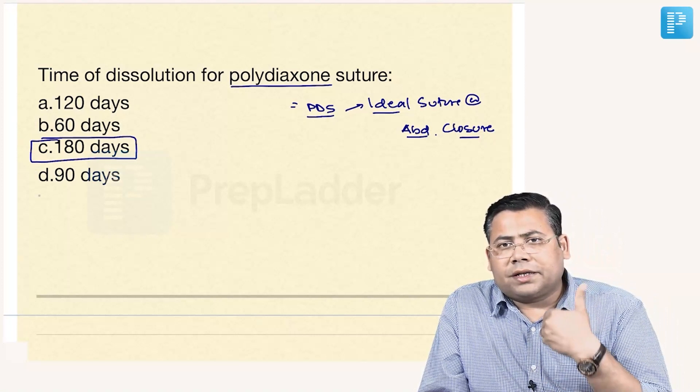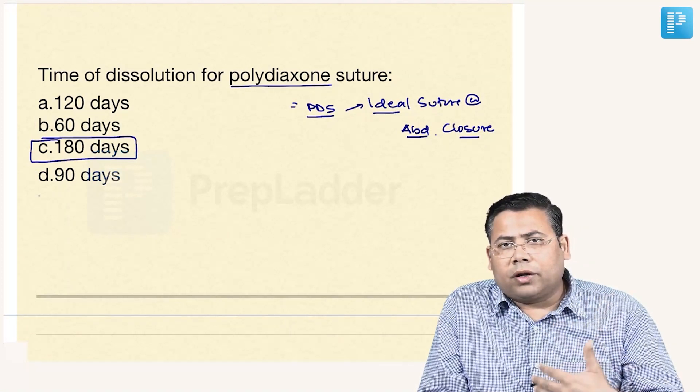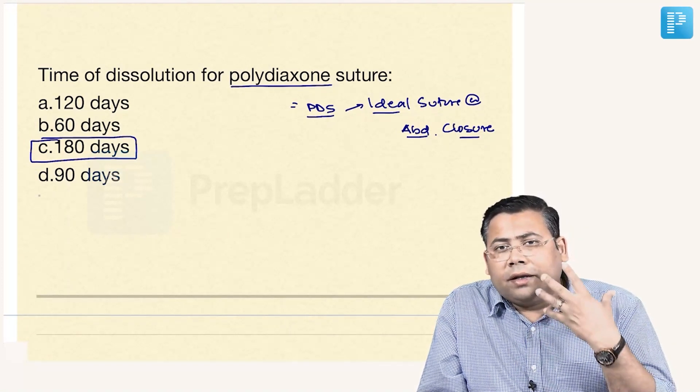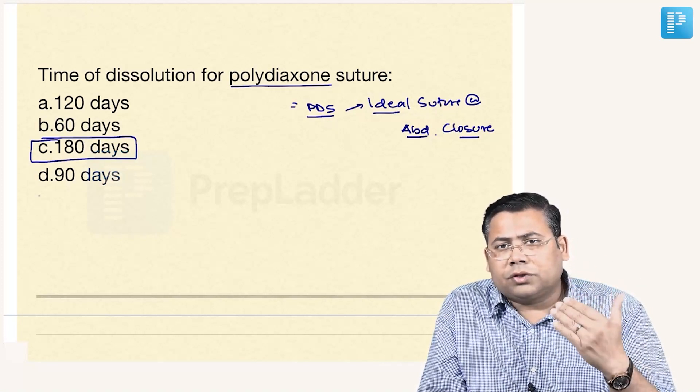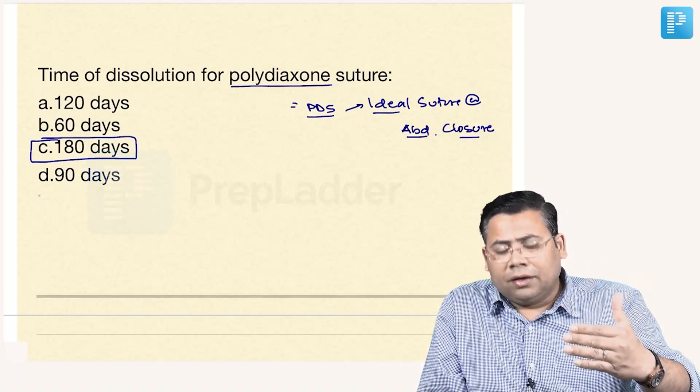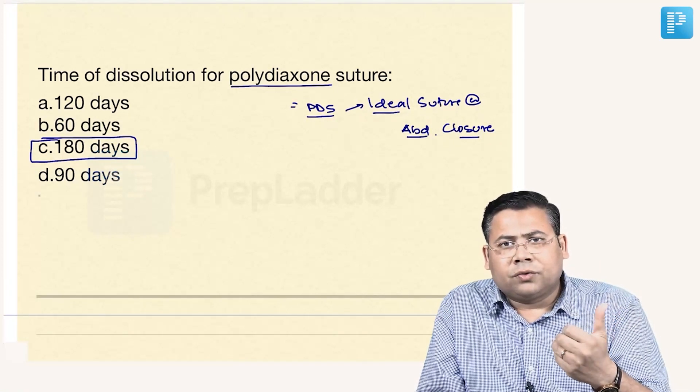Because it gets absorbed in 180 days, it is ideally used because 6 months is the time taken by the abdominal wall or any muscular tissue to gain 90% of the strength. After that it has no use because no tissue will have 100% of the strength and thus by that time it starts to dissolve.